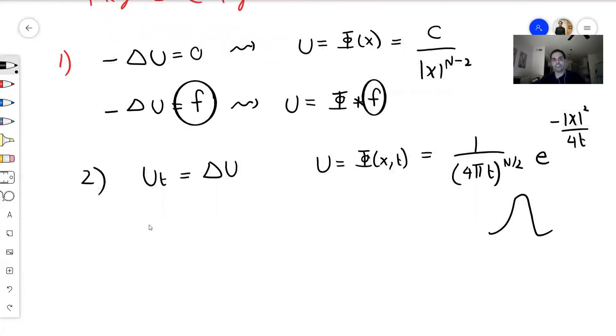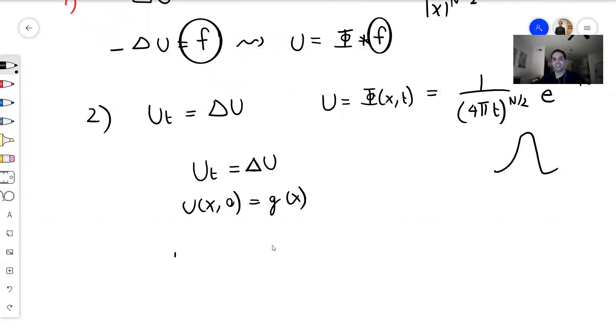And the question is now, how would you solve u_t equals Laplace of u, but with the initial condition g(x)? Very easy. You just convolve phi with the initial condition. So your solution would be given by the integral over R^n of phi(x-y,t) g(y) dy.